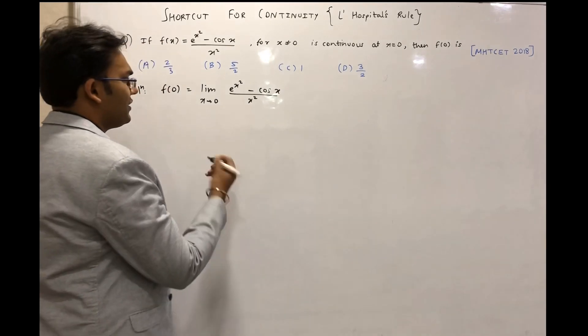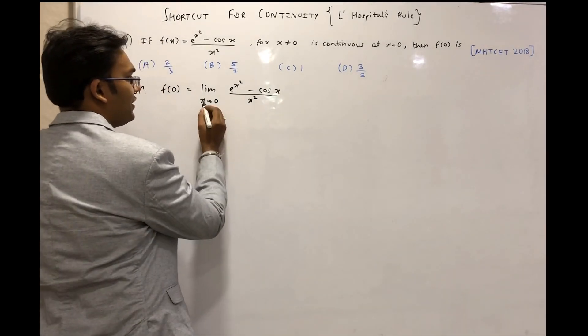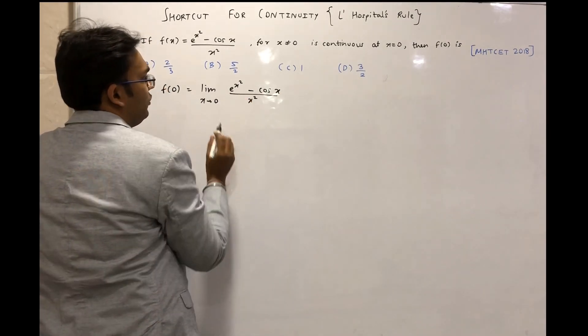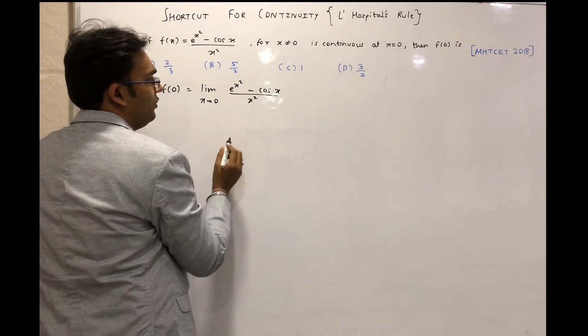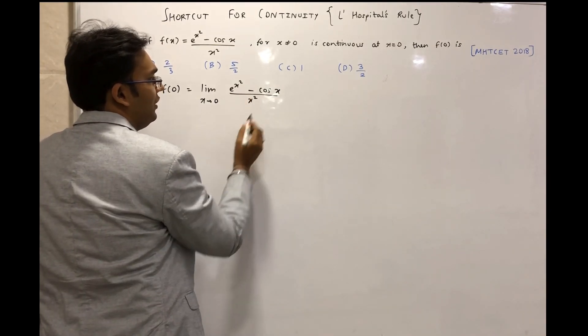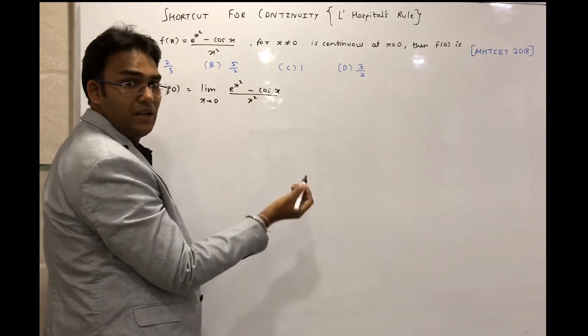First of all let us check out what will happen if we substitute x = 0 in this function. So if we substitute x = 0 here it will be e^0 minus cos 0. So e^0 is 1 minus cos 0 is again 1.